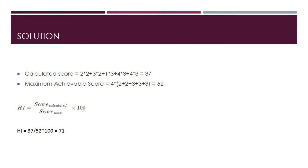We first calculate the calculated score, which is the sum of the ratings multiplied by the weight of that category. In this case, the number is 37. Then we calculate the maximum achievable score, which is 4 times the sum of all the weights, and that equals 52. The health index formula is score calculated over score max times 100, so 37 divided by 52 times 100 equals 71. As mentioned in the fundamentals previously, a value between 70 to 85 is considered good, and as such, there might be deterioration of some components and only normal maintenance is needed.